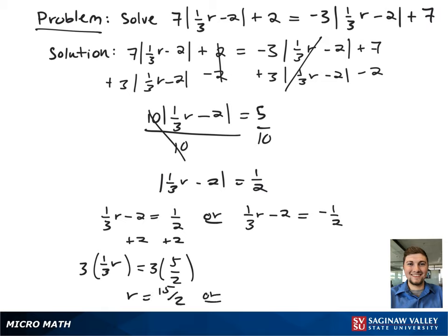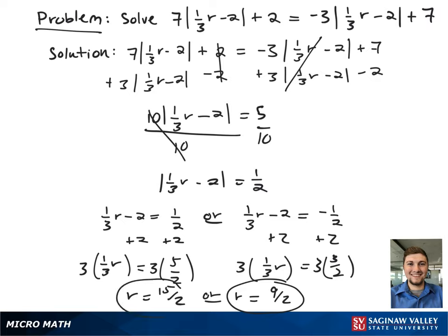Moving to the right-hand case, we again add 2 to both sides, giving one-third r equals 3 halves. Multiplying both sides by 3 gives r equals 9 halves. Those two values are our final answers.